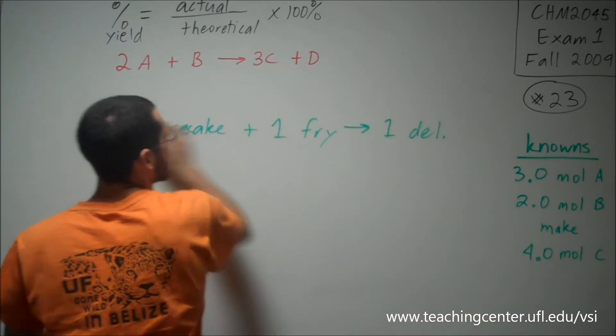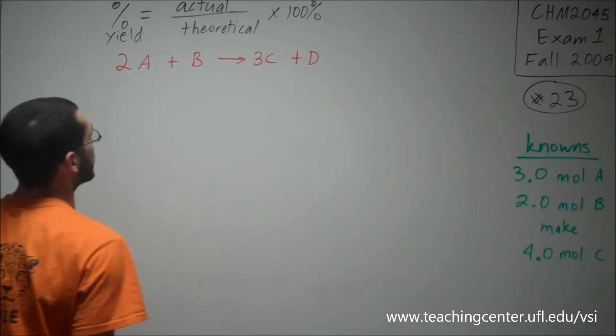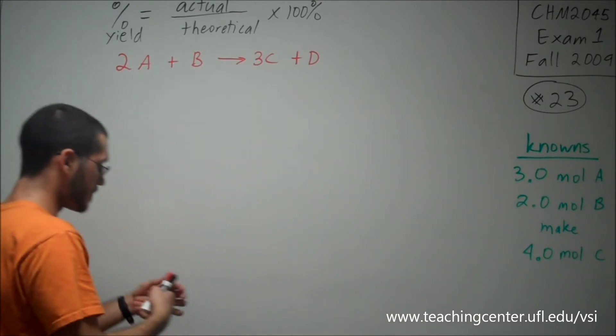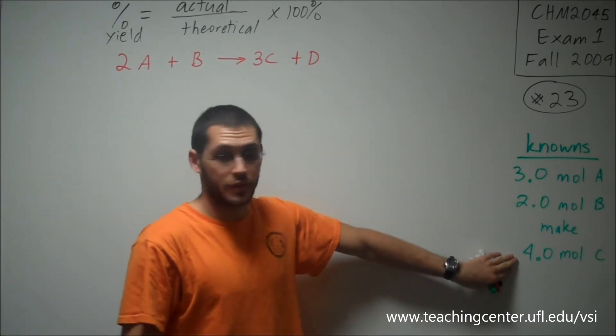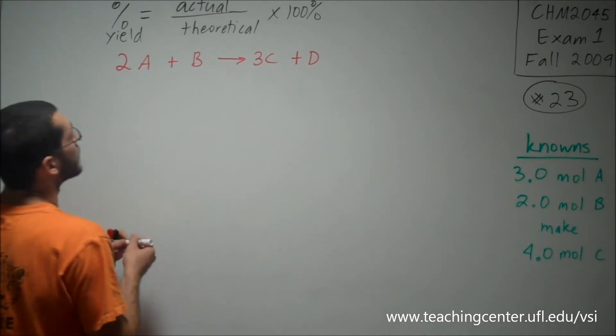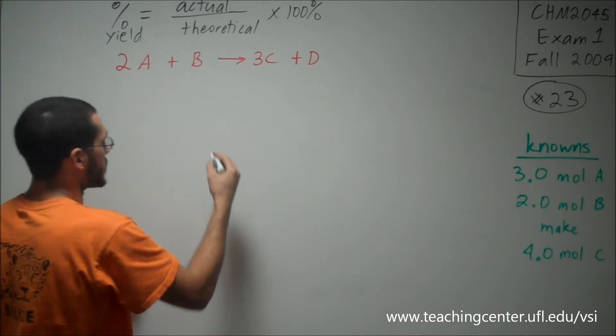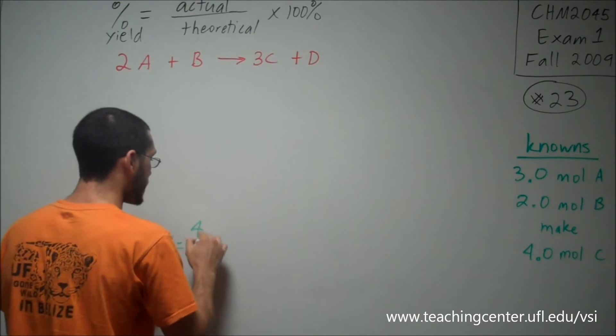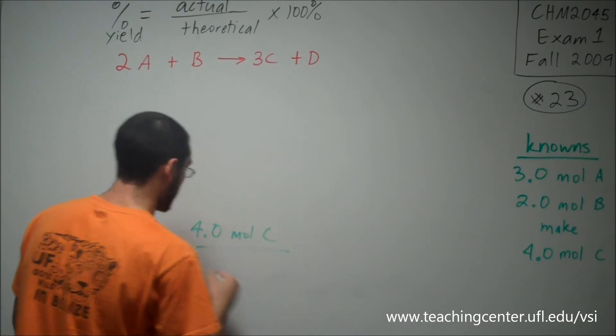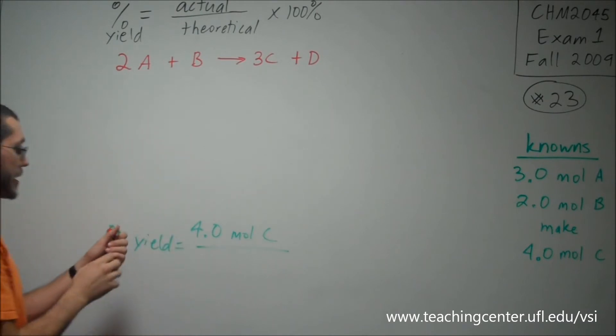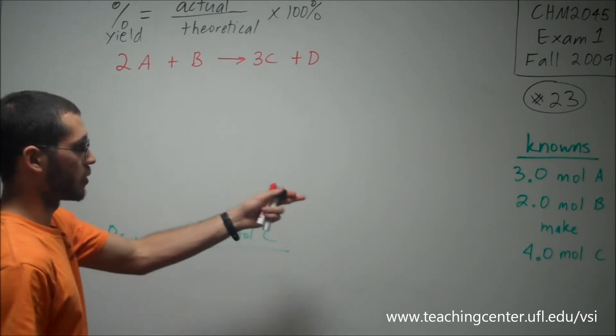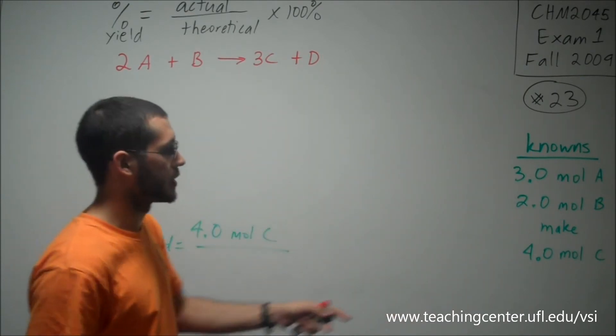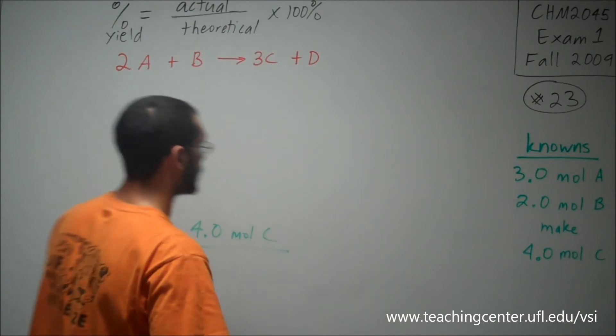Let's apply it to this real chemistry problem. Theoretically, what could I make if I had 3.0 moles of A and 2.0 moles of B? This is not my theoretical yield. This is actually what I made. So that's going to go on the top of my percent yield equation. So for this reaction, I actually made 4.0 moles of C. Now the next step is to find out theoretically how many I could have made based on what I have. Which one of these will run out first? Will one of them run out? Maybe I don't have a perfect enough quantity of these to use them up both at the same time.